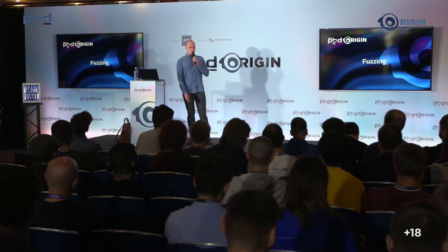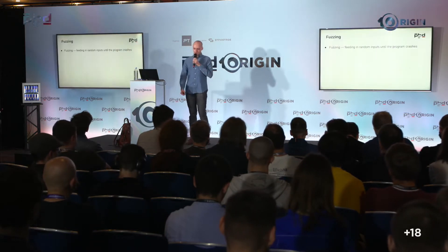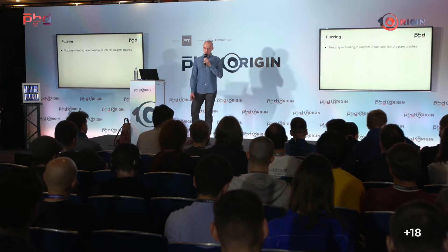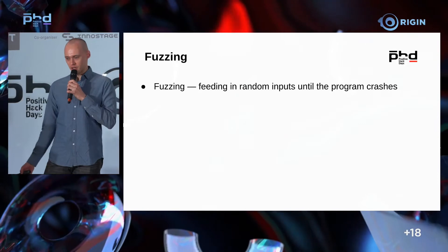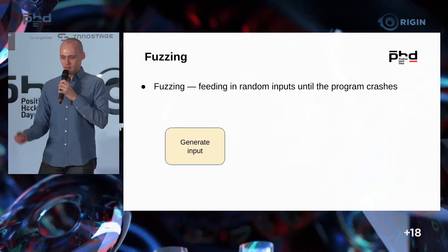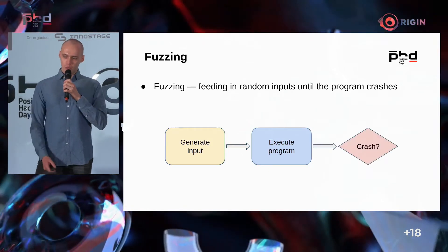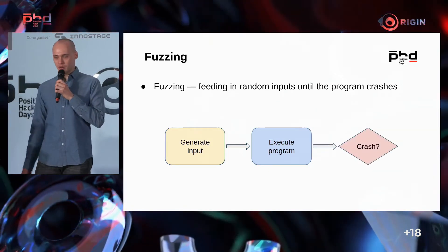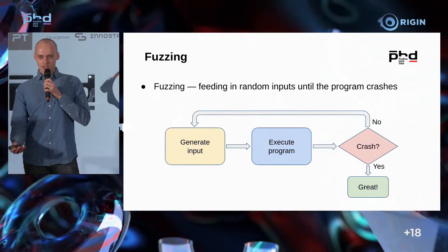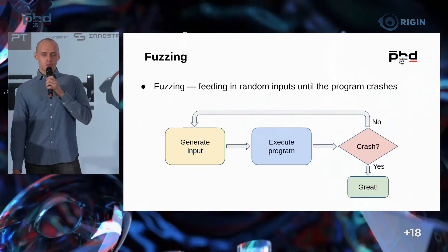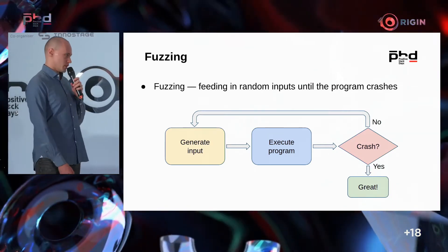What is fuzzing all about? Globally, fuzzing is a way to look for errors in code. How does it work? We generate arbitrary data, pass it to the software, and wait until it crashes — and do it in a cycle. We send some random inputs, execute the program, and if the program crashes, that's great — we've found a bug.